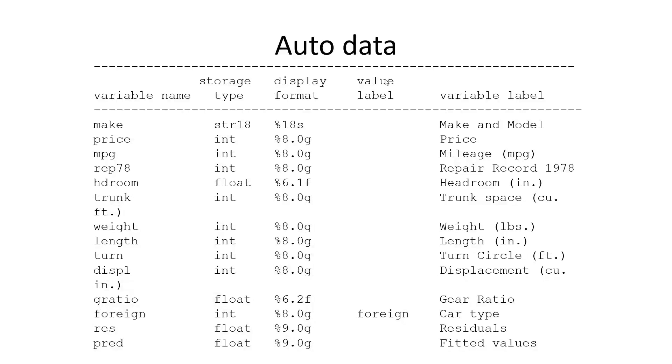We have talked about robust standard errors and now look at an example that uses them. The auto dataset has some 70 to 80 observations of cars that were tested in the Consumer Reports magazine in the U.S. in the 70s or 80s, actually in 1978.